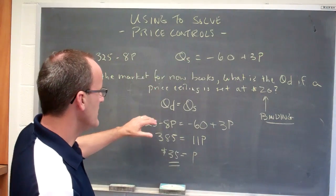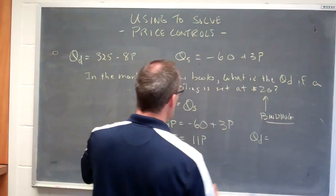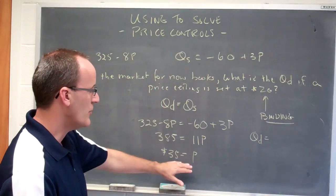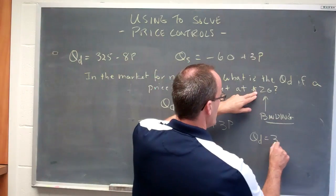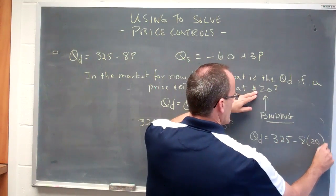And so we'll go ahead and plug this in for QD. Here's QD, and we're trying to figure out what that would be when the price is 20, so we get 325 minus 8 times 20.